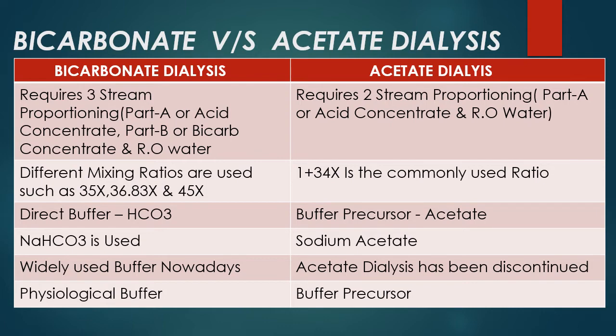If we talk about the mixing ratios for bicarbonate dialysis, there are various mixing ratios available such as 35X, also known as the Fresenius style mixing ratio; 36.83X, also known as the Drake style mixing ratio; and 45X, also known as the Cobb style mixing ratio. For acetate dialysis, the commonly used mixing ratio is 1+34X.